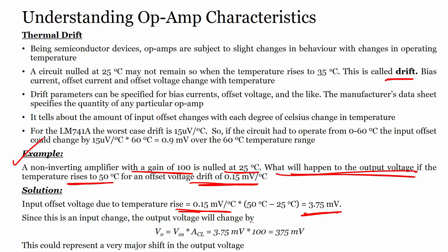Since this is an input change, the output voltage will change by Vo = Vos × gain. With Vos = 3.75 millivolts and the closed loop gain, Vo equals 3.75 millivolts. This could represent a very major shift in the output voltage — this is a very major drift, showing significant effect of temperature on the performance of the operational amplifier.